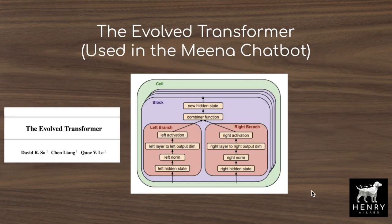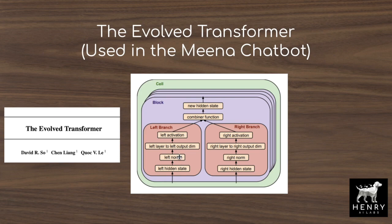One example where neural architecture search has been really successful is the Evolved Transformer used in Google's Meena chatbot. In the Evolved Transformer, they automatically design neural networks, but the way they do so comes with a manually designed design space. The researchers pre-encode a bias on the structure of the neural network — with a left branch, right branch, the hidden state going through a normalization layer, a second layer, and then the activation function. The search then takes this manually defined design space and plugs in different operations and different normalizations into it.